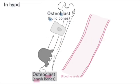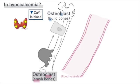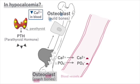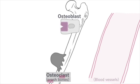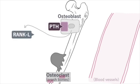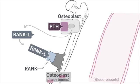In hypocalcemia, when calcium levels in the blood decrease, the parathyroid glands secrete parathyroid hormone. PTH binds to receptors on osteoblasts, leading to the production of RANK-ligand. RANK-ligand then binds to the receptor RANK on osteoclasts, activating them and causing bone resorption to increase calcium levels in the blood.